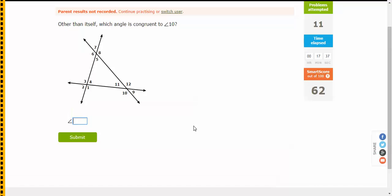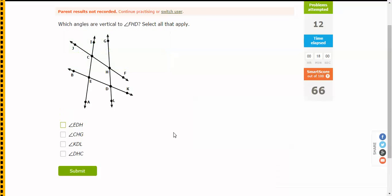So I'll just do another couple of these. Other than itself, which angle is congruent to number 10? So which angle is the same as number 10? Now because I know about vertical angles, then I think that 12 is, because it's opposite in the intersection of lines. And I know that vertical angles equal each other. So let's see if I'm right. There you go, I was.